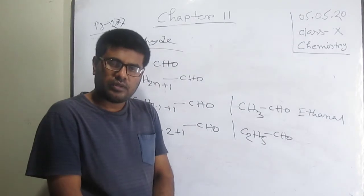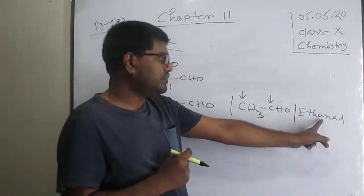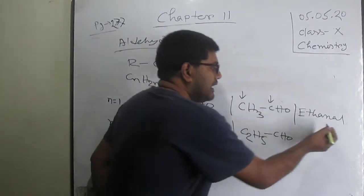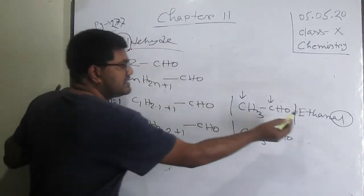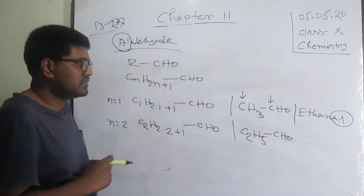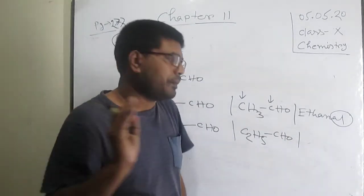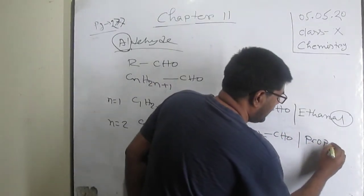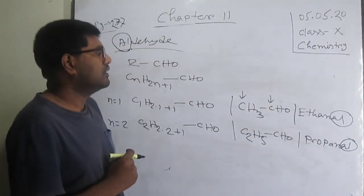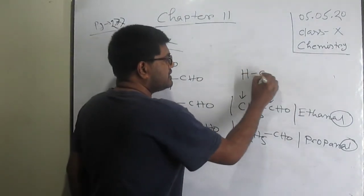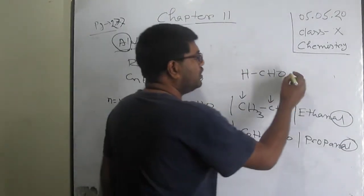One carbon in the formula represents methane, two carbons represent ethane. The compound C2H5CHO has two carbons in its alkyl part, so it is called ethanal. The last two letters for aldehyde naming are '-al'. For three carbons (n=2 giving C3 total), that is propane-based, so it is called propanal. The last two letters '-al' denote aldehyde.